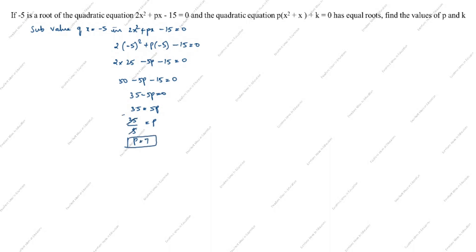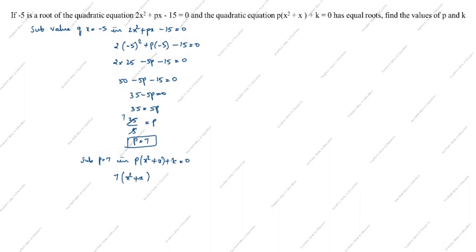Now we have found the p value. Next we will find the k value. We substitute p = 7 into the given quadratic equation p(x² + x) + k = 0, which becomes 7(x² + x) + k = 0.